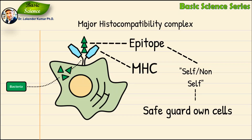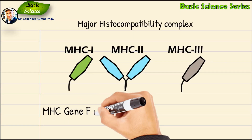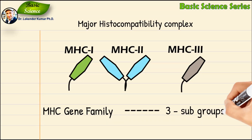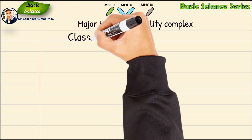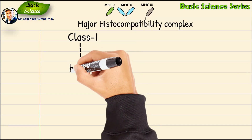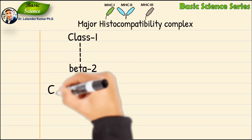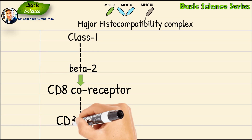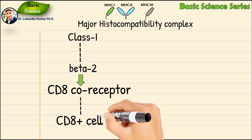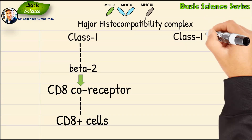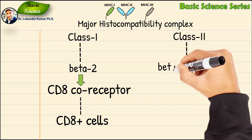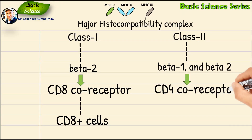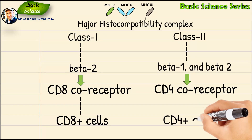The MHC gene family is divided into three subgroups: MHC class 1, MHC class 2, and MHC class 3. MHC class 1 molecules have a beta-2 microglobulin subunit, which can only be recognized by CD8 co-receptors; therefore, they bind with cells that express the CD8 co-receptor. Class 2 MHC molecules have beta-1 and beta-2 subunits and can be recognized by CD4 co-receptors; therefore, they bind with cells that express the CD4 co-receptor.